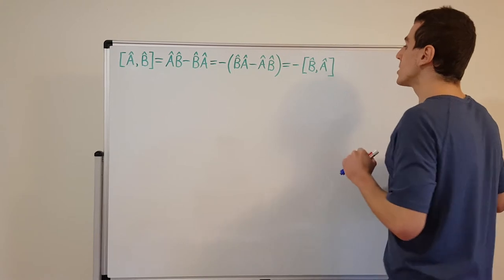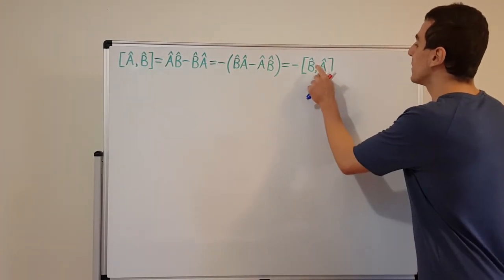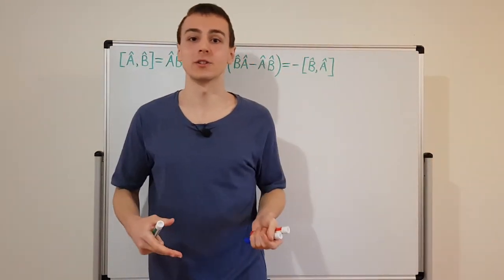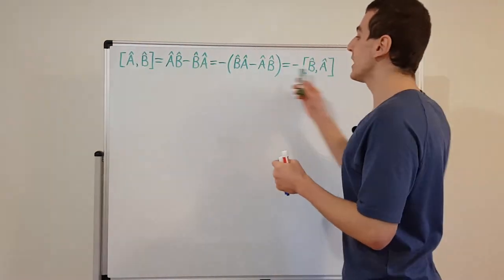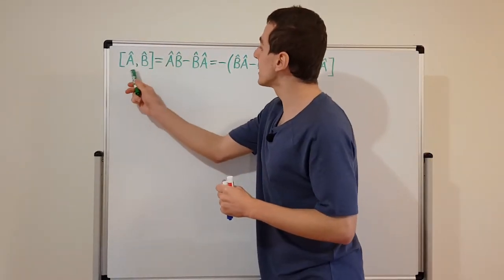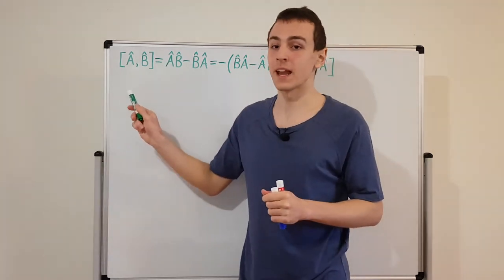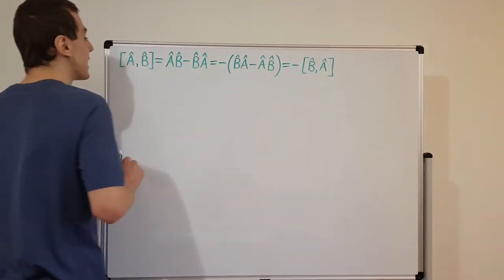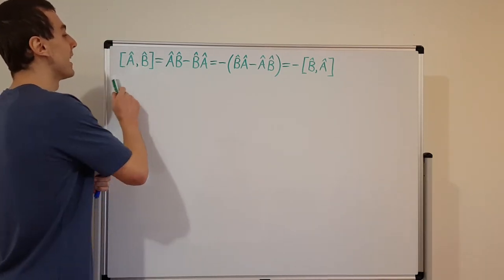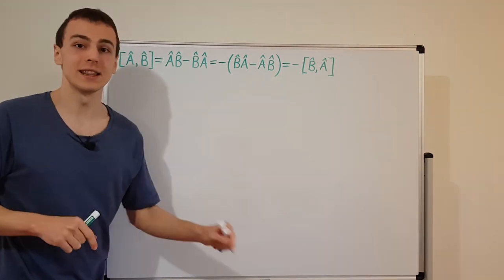Now I want to take a specific example: I want to set A and B equal to the position and momentum operators. In this general form, A and B could actually commute — this combination could be equal to zero. If it is, those operators are called compatible operators, also known as compatible observables, and we'll get to that in a later video.